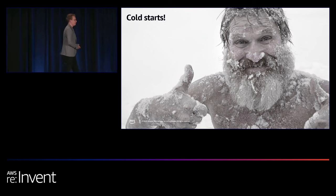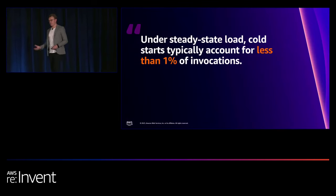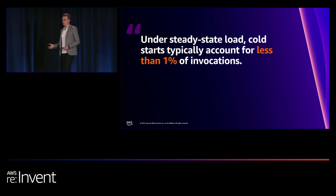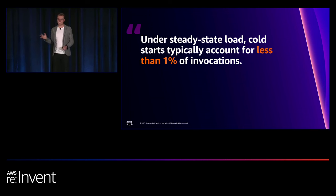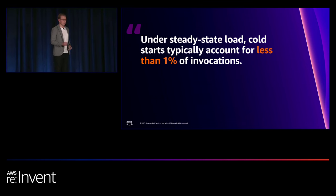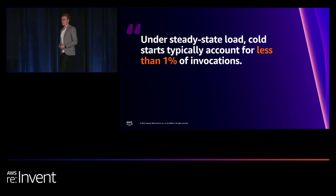Cold starts are the elephant in the room when talking about .NET and Lambda. Before exploring how to optimize them, a couple of important points: under steady state load, cold starts typically account for less than 1% of invocations — benchmarks show it's typically about 0.4% of requests. Also, every single time you publish a new version of your function, you are guaranteed to see a cold start. So when evaluating if cold starts will be a problem, don't just deploy and run once — run your function with actual load representative of your real-world scenario.